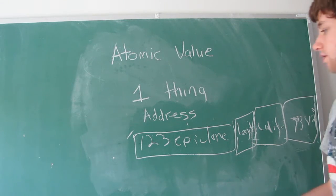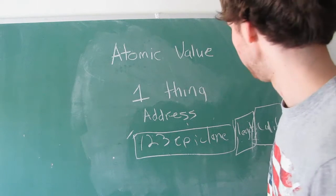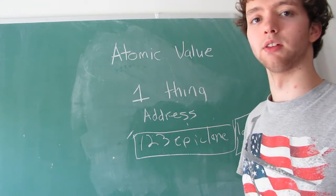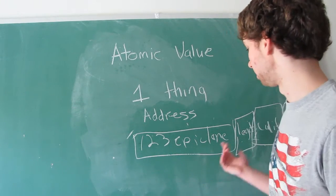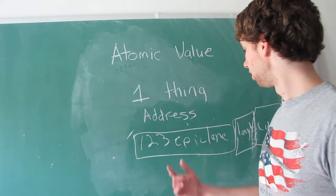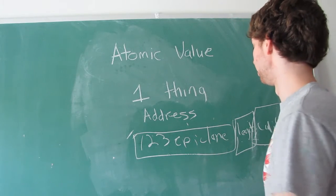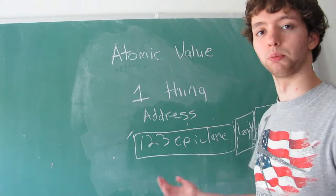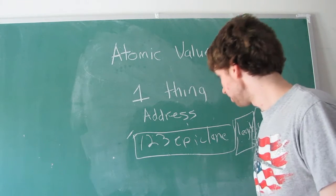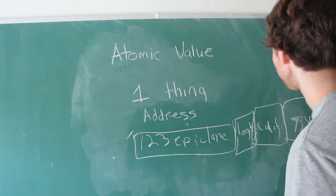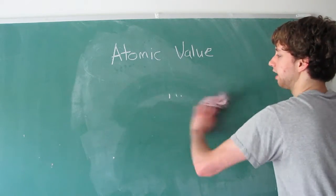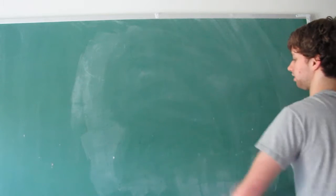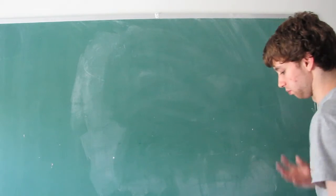And then that allows us to run more complex queries on our data because we can select all of the users from the state of California, or we can select all of the users who live in this city, or pretty much anything like that. So this is part of one of the normal forms which we will be talking about in the future. But as for now, just think of storing everything as one.